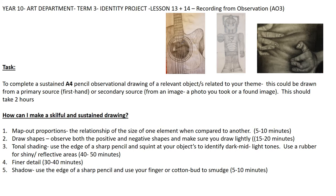You are now required to add tonal shading using the edge of a very sharp pencil. Make sure you squint at your objects or the image that you're working from to identify those dark to mid to light tones. Use a rubber for shiny or reflective areas. This should take you between 40 to 50 minutes. Get this correct before you go on to the next stage.